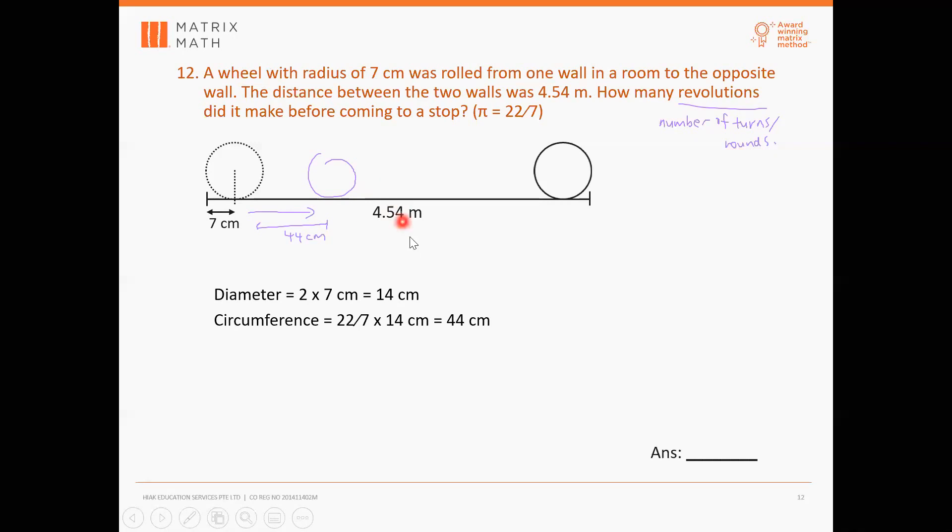Okay, now after that, what do you all do with 4.54 first? Make it into cm. Very good. So how do you all make it into cm? 454 cm. Okay, so just times 100, right? Okay, this one, conversions, you all should be good by now.